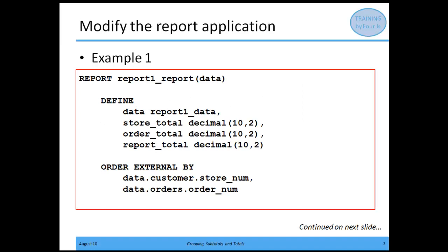In this presentation, I'm going to show you two different ways to modify your report application so that the totals and subtotals are being sent across in the XML data stream. In this first method, we're going to modify a report block. When we modify the report block, one of the first things we do is add variables to our definition. We're going to define a store total, an order total, and a report total — here defined as decimal 10 comma 2. You would use the data type applicable for your application.